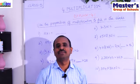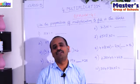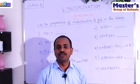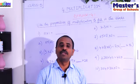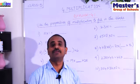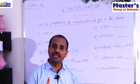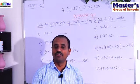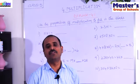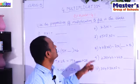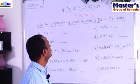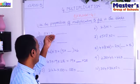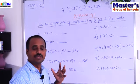Up to now we have discussed four properties of multiplication: multiplication of a number with 0, multiplication of a number with 1, multiplication of two numbers in any order, and multiplication of three numbers where grouping any two numbers gives the same product. Now we will practice some problems using these properties. Let us go to Exercise 4.1.